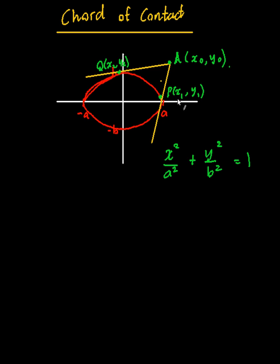So suppose for now that I have an external point called A and it's like x0, y0, and from that I draw two tangents to an ellipse.